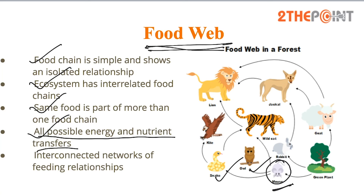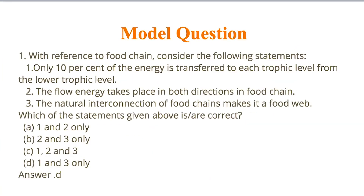The food web shows all possible energy and nutrient transfers. It is an interconnected network of feeding relationships — not just a single line but a network of all the feeding relationships in an ecosystem. With this we have come to the end of today's session. We'll discuss ecological pyramids in the next session. Thank you.